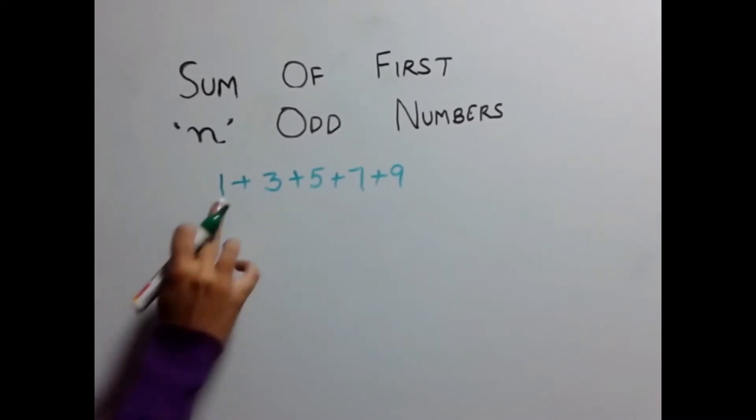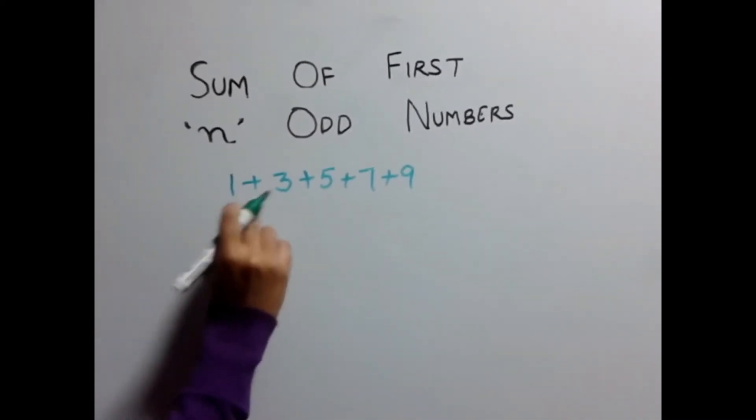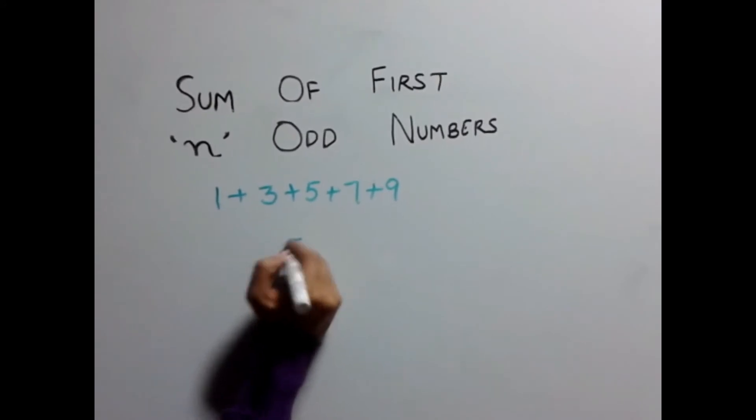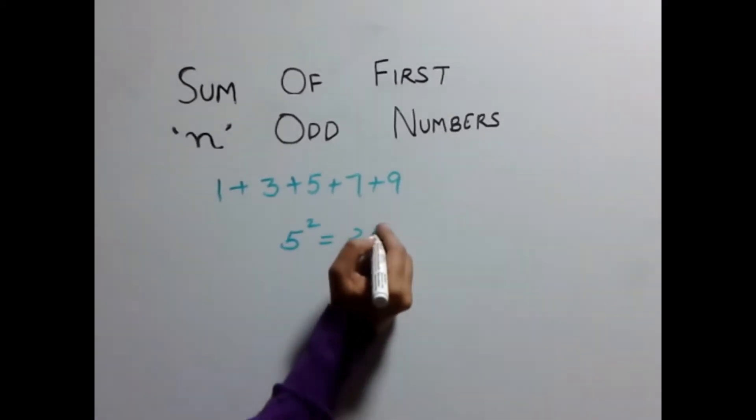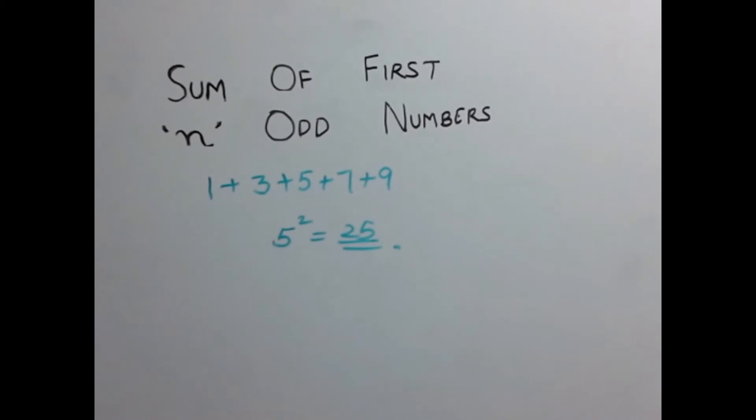For this, what you need to do since there are 5 digits, 1, 2, 3, 4, 5, simply square them which gives you 25 as the answer. Easy?